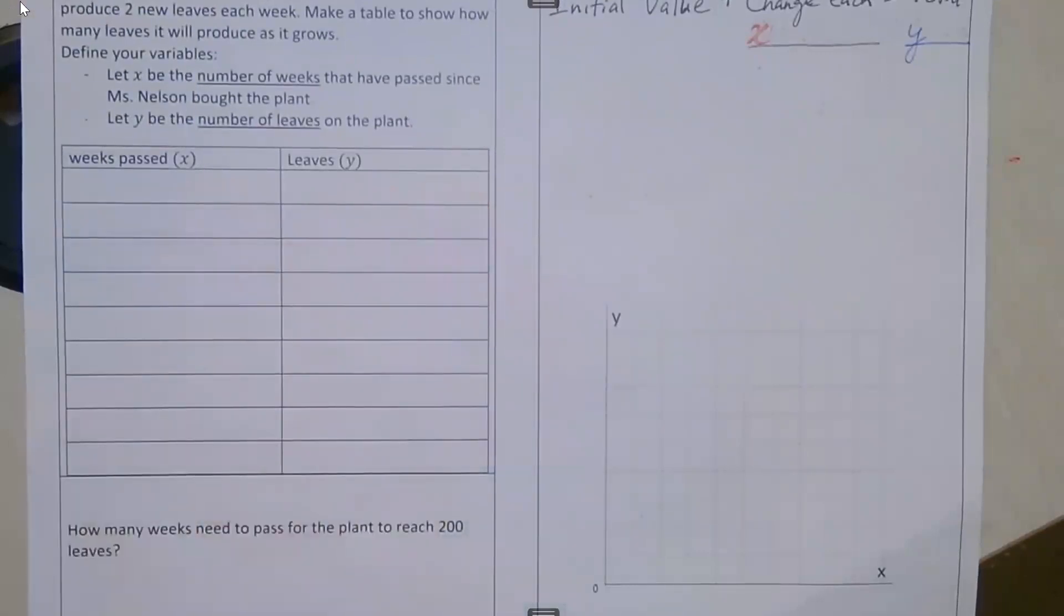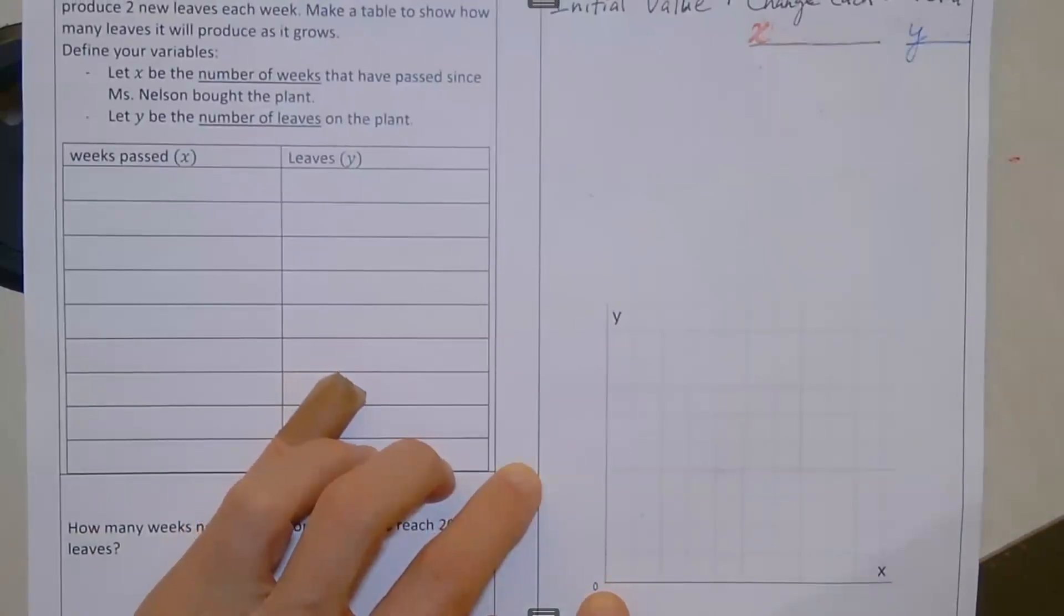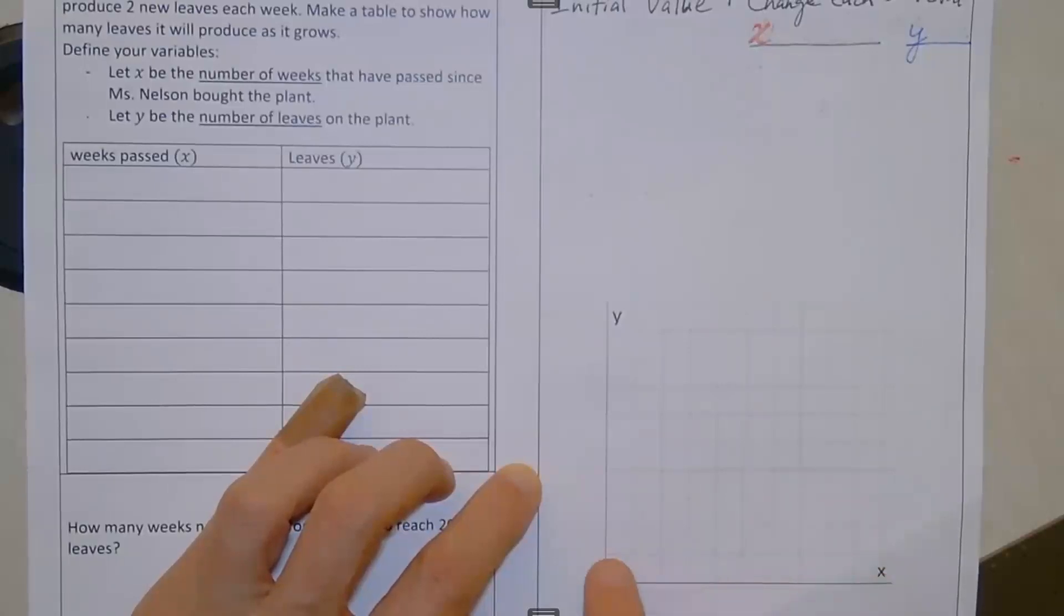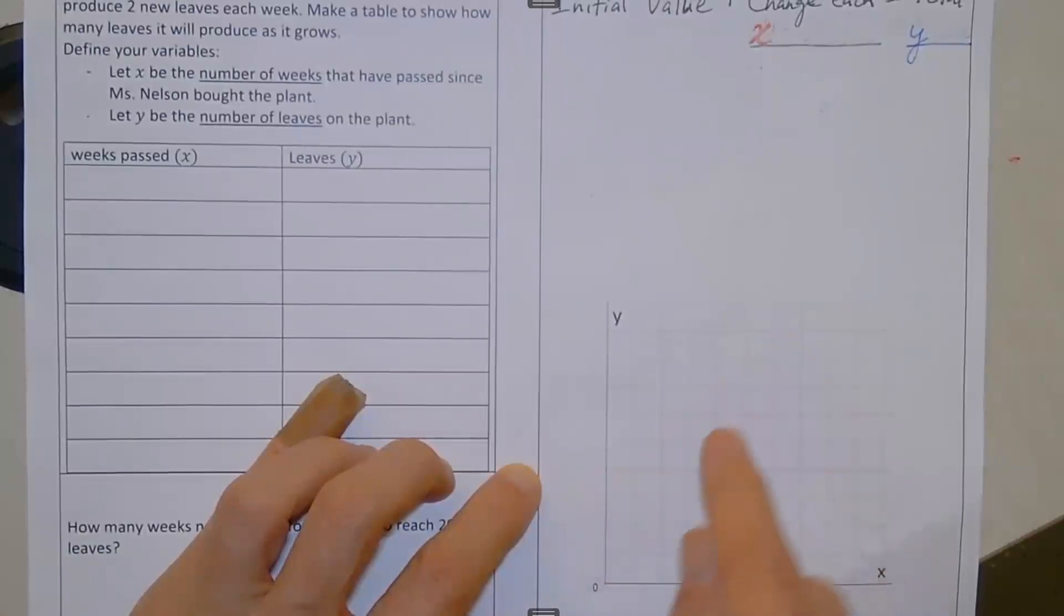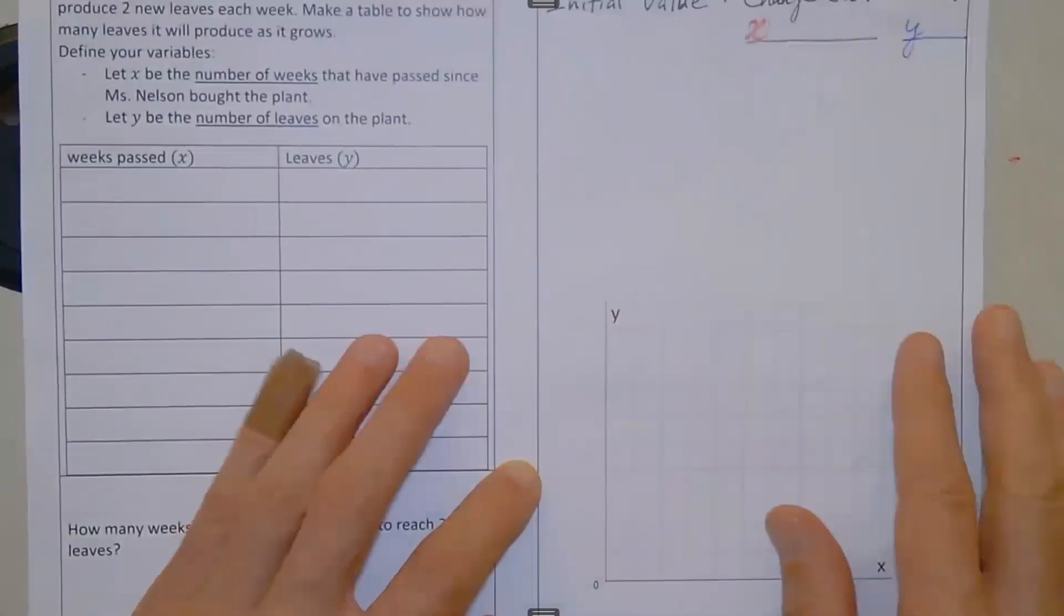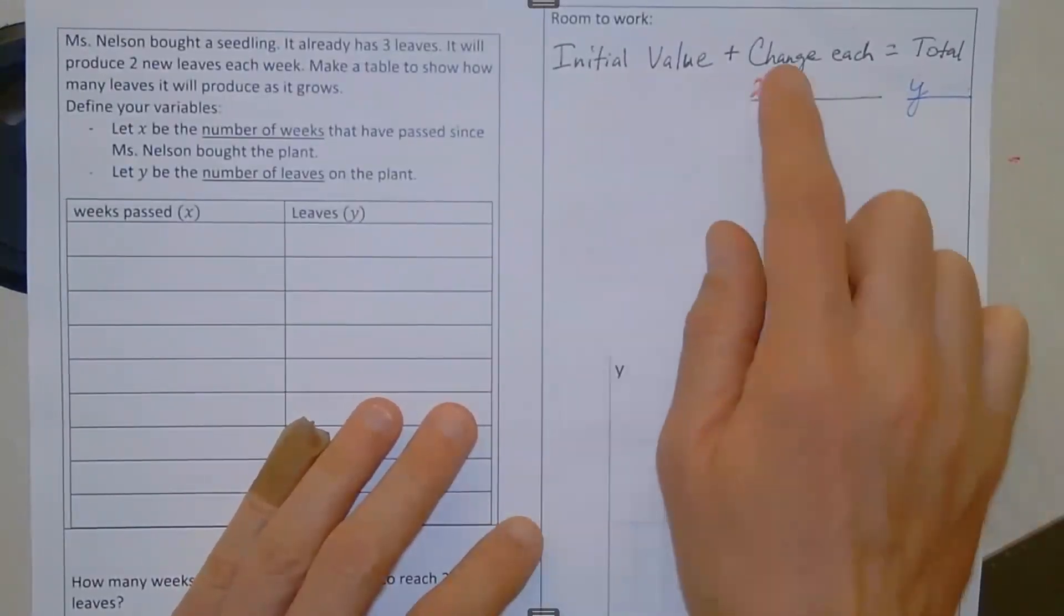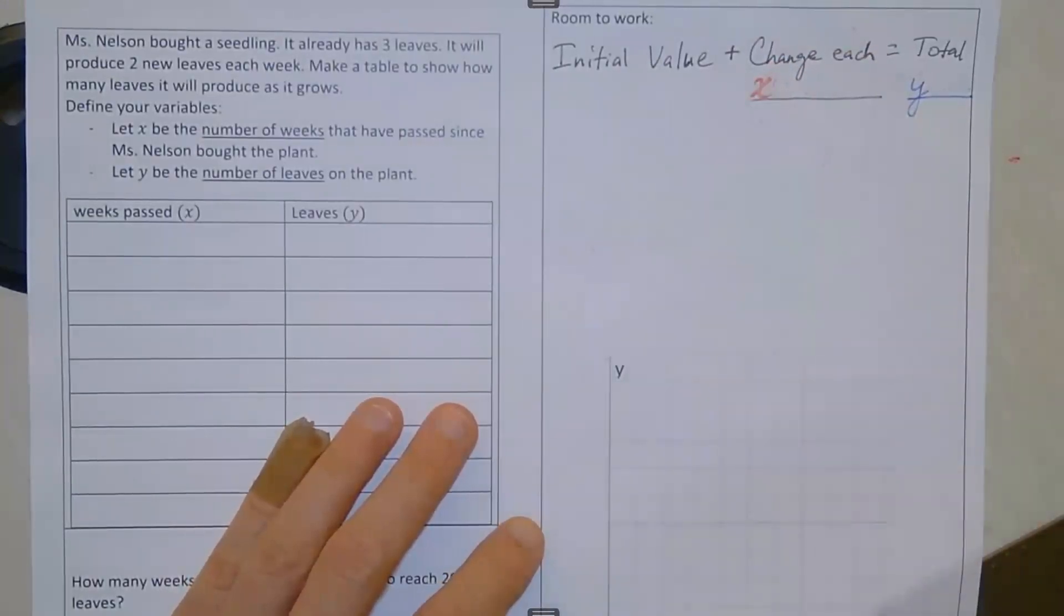So what we mean is, as we go from X equals zero to X equals one to X equals two, as X increases, Y will also change. Y might increase, Y might decrease. It's also possible that Y does not actually change. But we have some initial amount, some initial value, and then we're looking at some change as X is increasing.